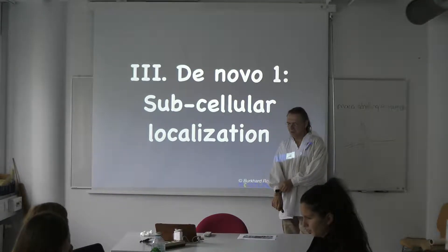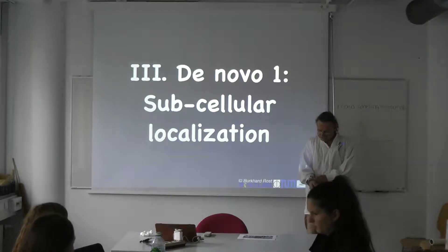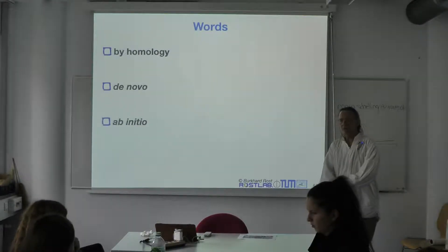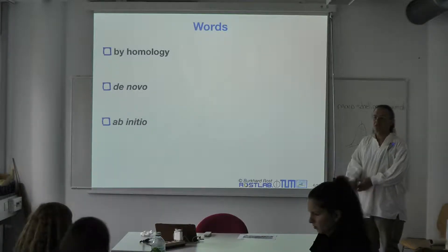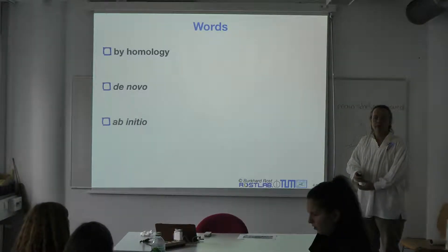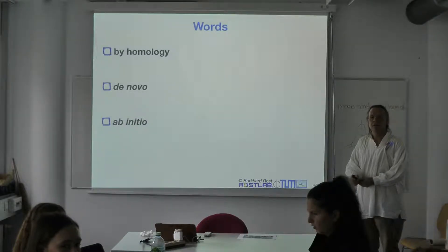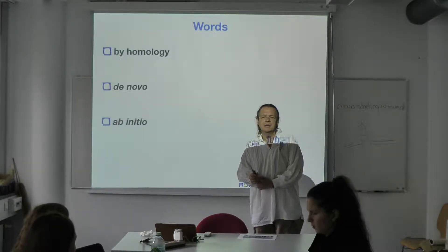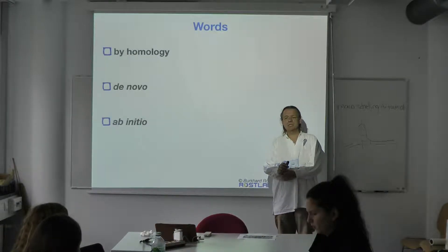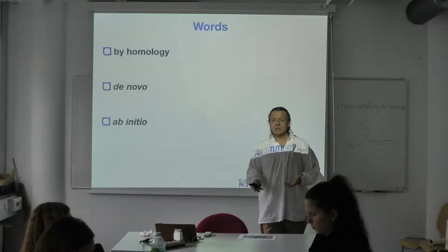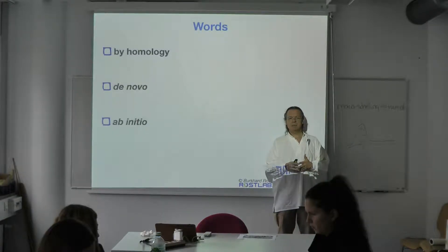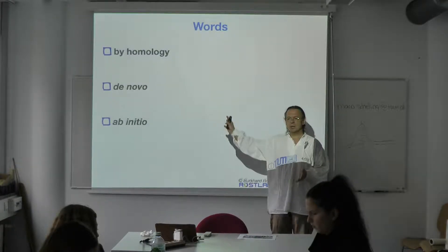Let's talk about de novo prediction, or prediction of sub-cellular localization. On this slide we already have these three words. By-homology means, on the level of the protein, prediction by sequence similarity. So you have a protein K for which you know the sub-cellular localization, and a protein U that is sequence-similar to K. When U and K are similar enough, you say they have a similar sub-cellular localization. That is by-homology.